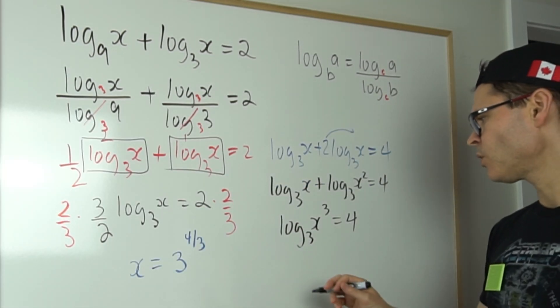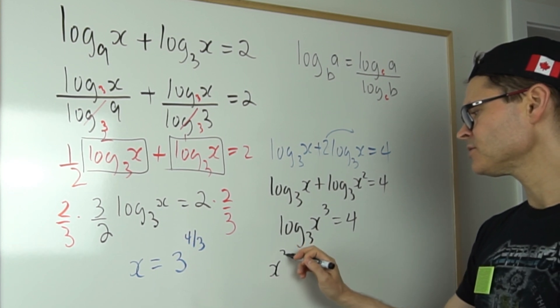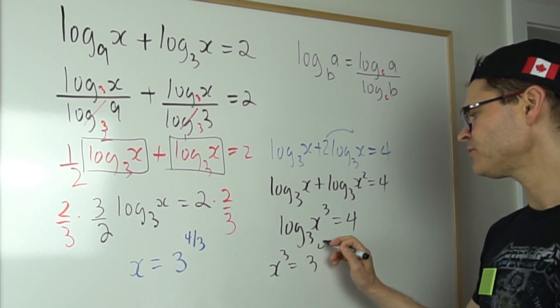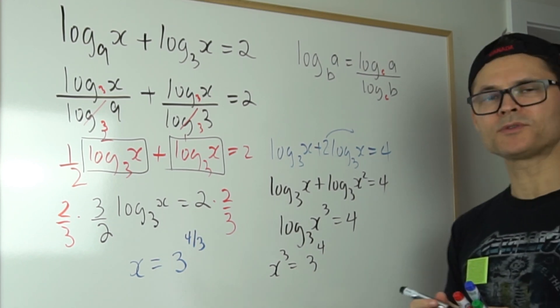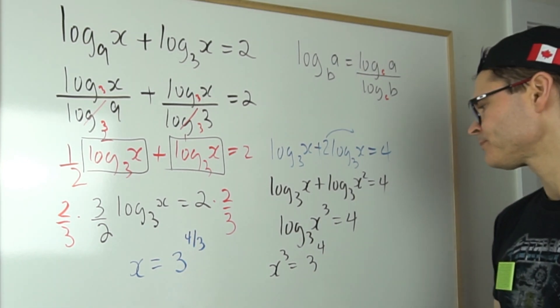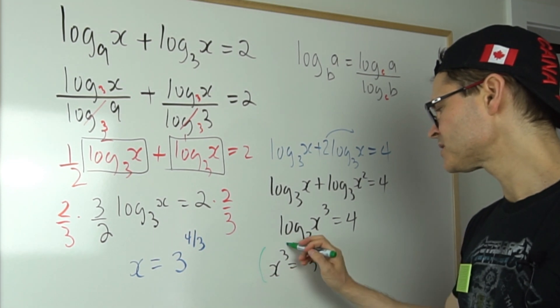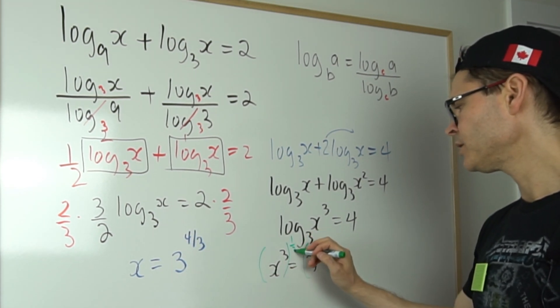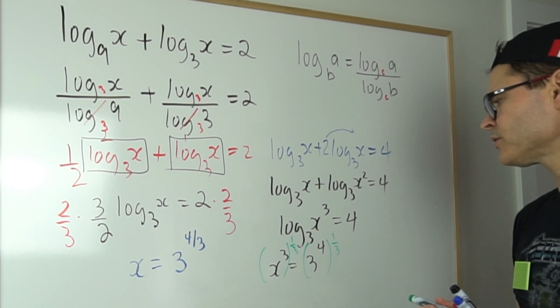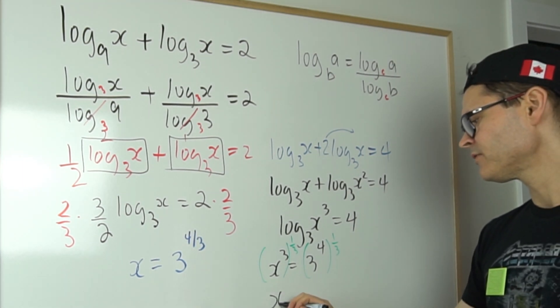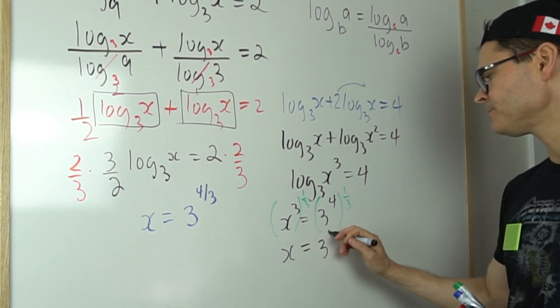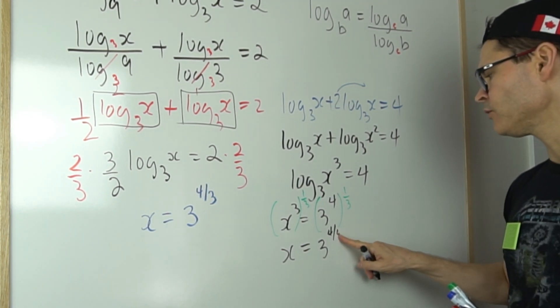And then of course here you've got x to the 3 equals 3 to the 4. And I could simply raise both sides to the 1 over 3, so raise both sides to the 1 over 3, 1 over 3, and I'm going to get the same answer. So the final answer would be 3 to the 4 over 3.